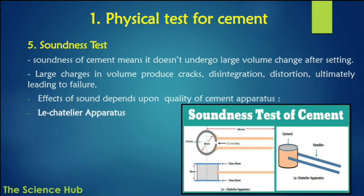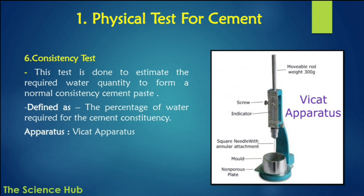The soundness test checks that cement does not undergo large volume changes after setting, as large changes produce cracks, disintegration, and distortion, ultimately leading to failure. The apparatus used is Le Chatelier's apparatus. The consistency test estimates the required water quantity to form a normal consistency cement paste, defined as the percentage of water required for cement consistency. The Vicat apparatus is used for this test.